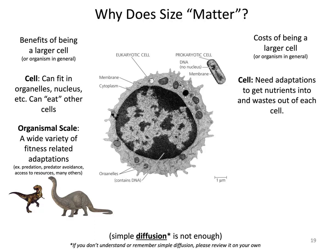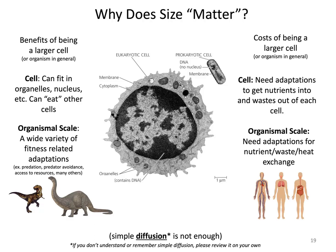At the organismal scale, there's a wide variety of fitness-related adaptations to being larger — a T-Rex capturing prey, a Brachiosaurus eating from treetops or fending off predators. However, it can also be costly to be a large organism because you need adaptations to get nutrients, wastes, and heat into and out of your body. Humans have evolved elaborate systems — a gut, a circulatory system, lungs — to ensure nutrients and gases can move easily in and out.